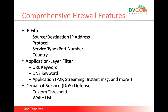IP filtering is the traditional approach — it's like an ACL where you specify source IP, destination IP, port number, and allow or deny rules. Application layer filtering is easier because modern applications constantly change their IP addresses. Instead of tracking IPs, you simply select a category like 'social media' or 'games' and click block. For example, to block all gaming websites, just select the games category and the router blocks all related traffic automatically.